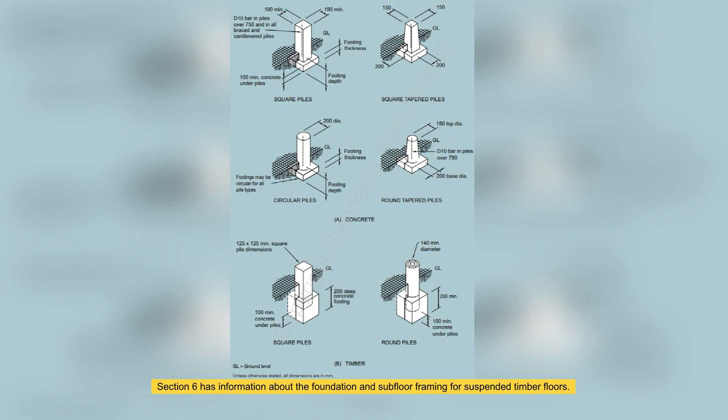Section 6 has information about the foundation and subfloor framing for suspended timber floors. It covers different types of piles and foundation walls, and also bearers and stringers.